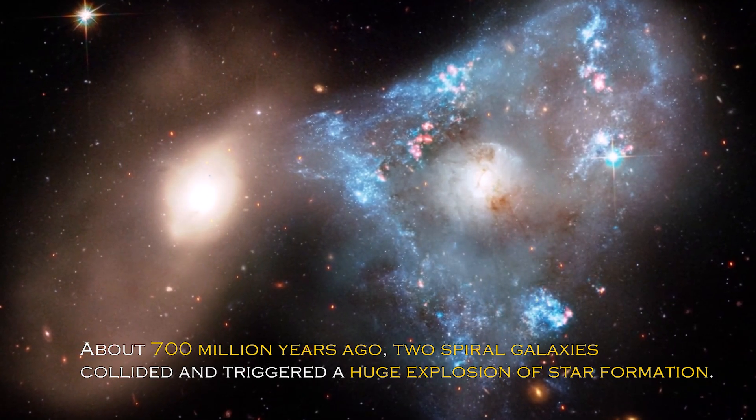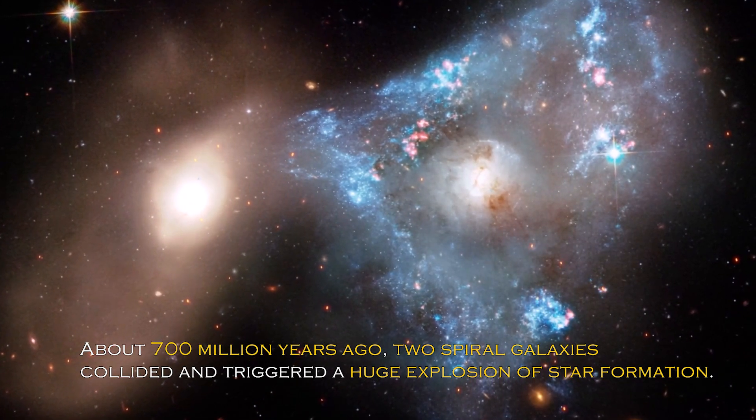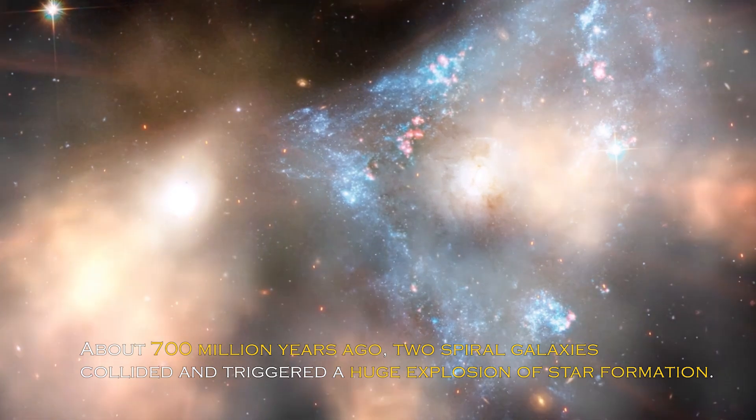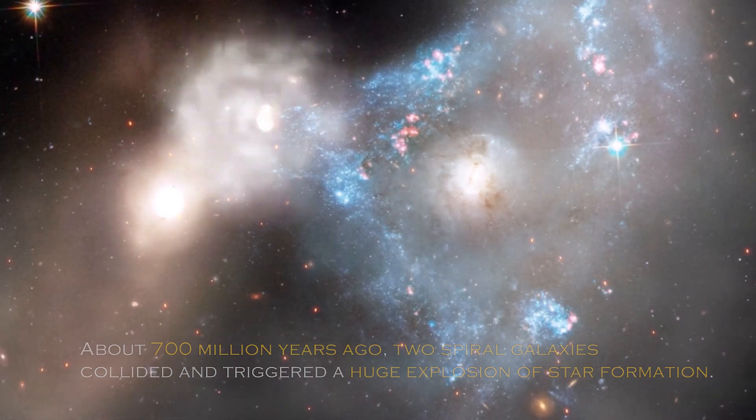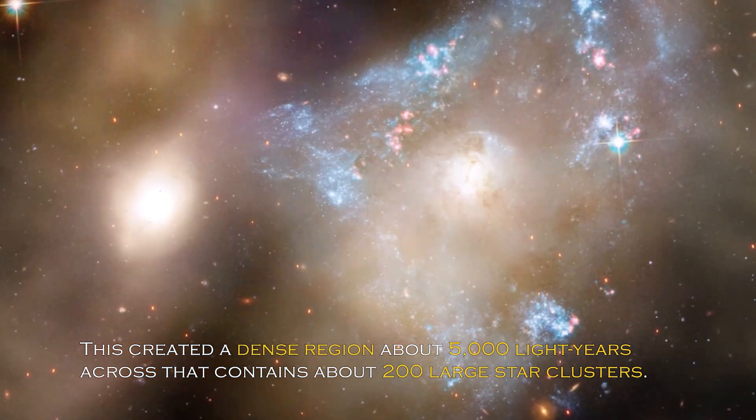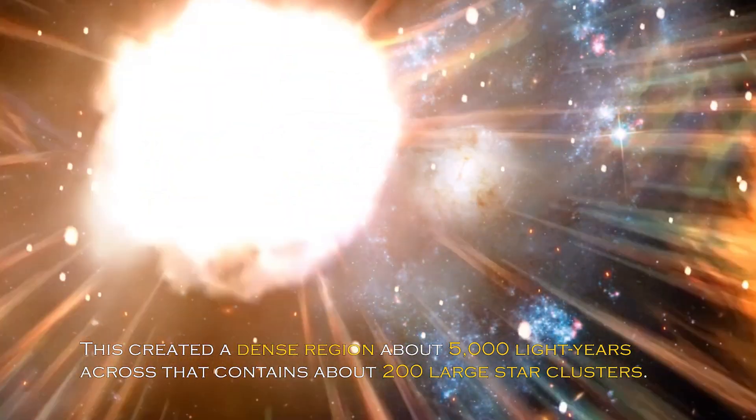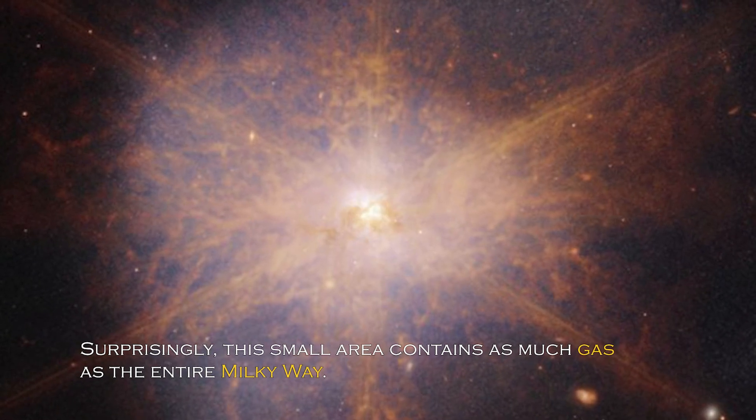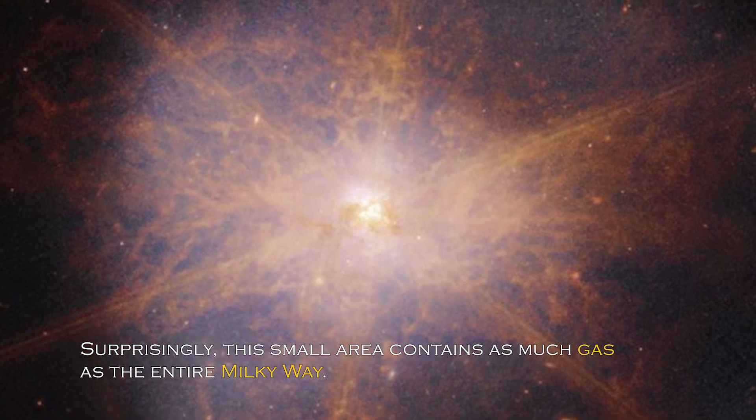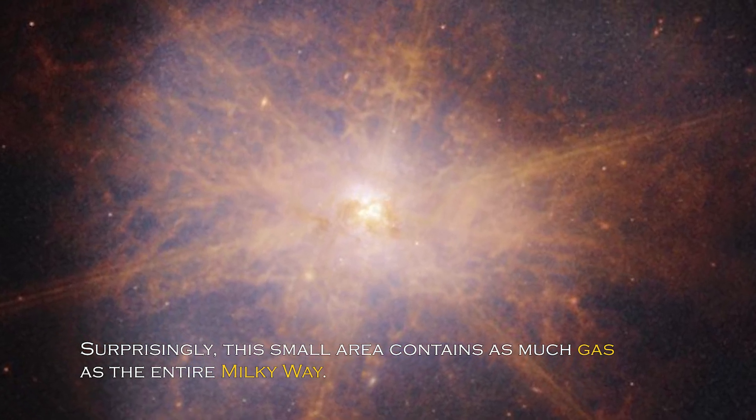About 700 million years ago, two spiral galaxies collided and triggered a huge explosion of star formation. This created a dense region about 5,000 light-years across that contains about 200 large star clusters. Surprisingly, this small area contains as much gas as the entire Milky Way.